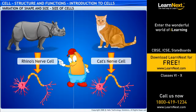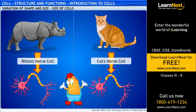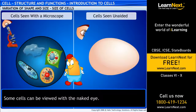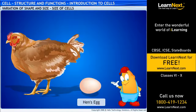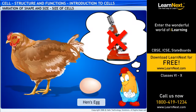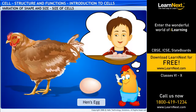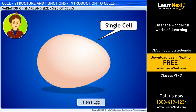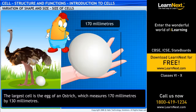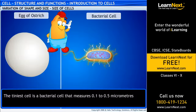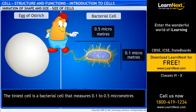In fact, the nerve cells in a rhino are very similar to those in a cat's body — in both cases the nerve cells are long and branched and are involved in the transmission of messages. However, there are some cells that can be seen with the naked eye. One is a hen's egg — it is a single cell. You probably eat eggs at breakfast often. The largest cell is the egg of an ostrich, which measures 170 mm by 130 mm. At the other end of the range, the tiniest cell is a bacterial cell that measures 0.1 to 0.5 micrometers.